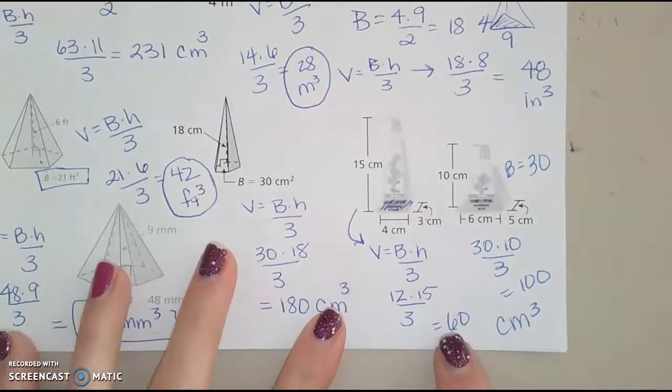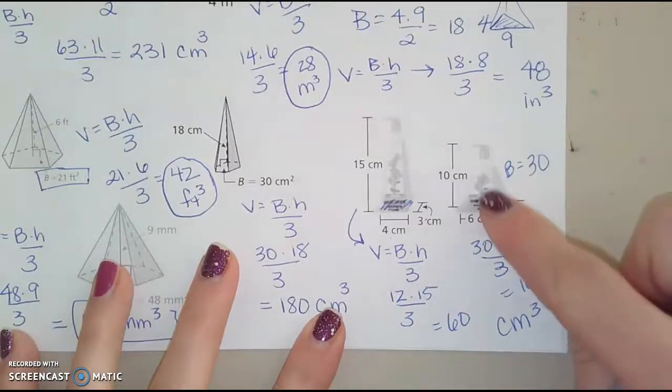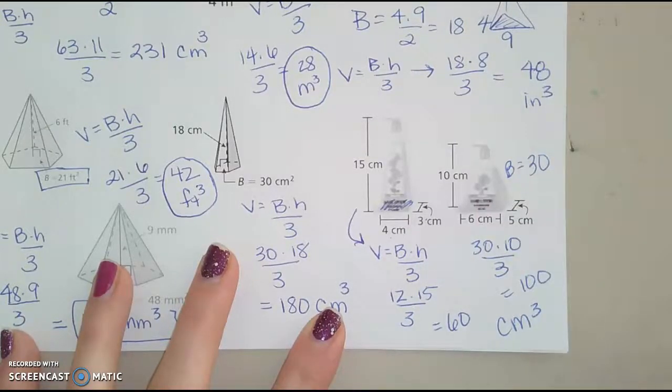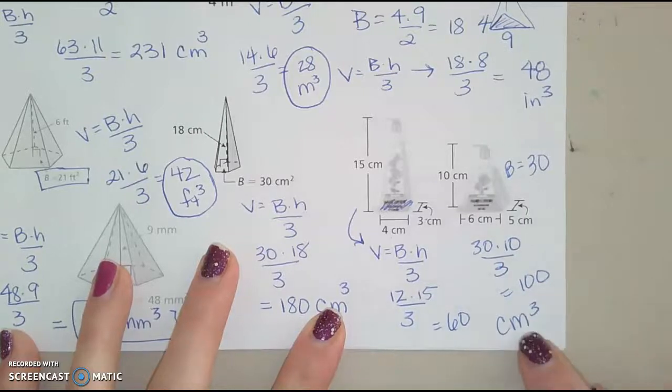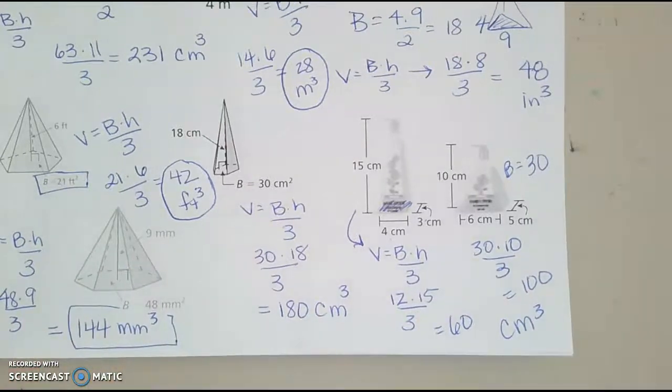Okay, so I just finished calculating, and I got that the shorter one. The shorter one has a bigger base, but it's not as tall, but that does hold more soap. So there's your video on volume of pyramids.